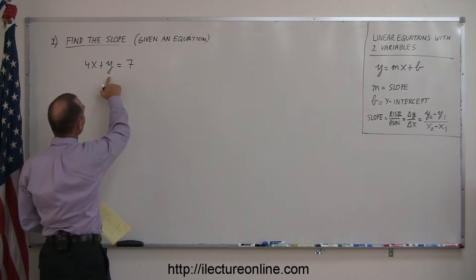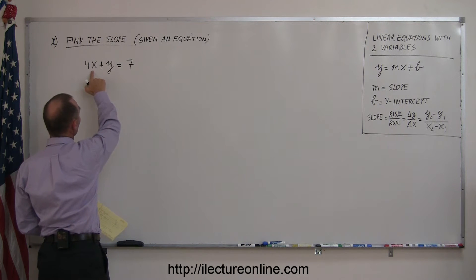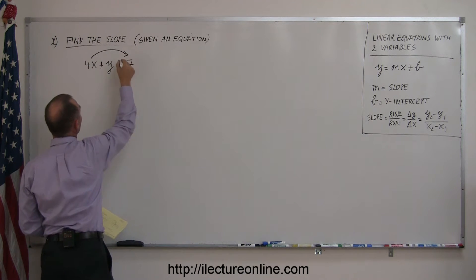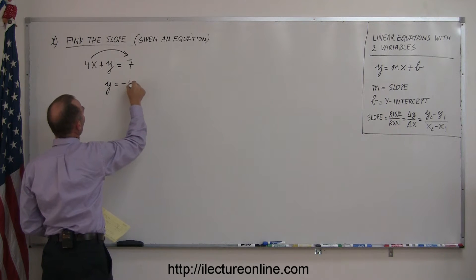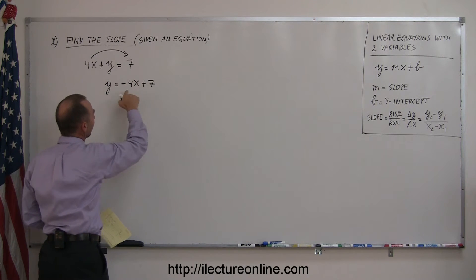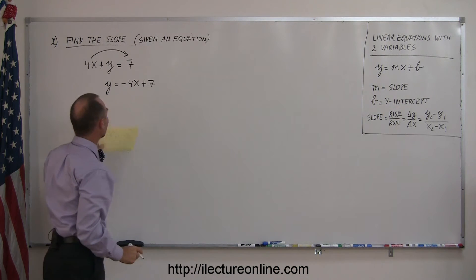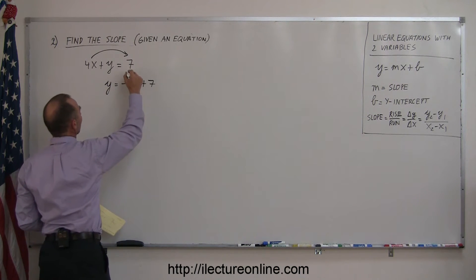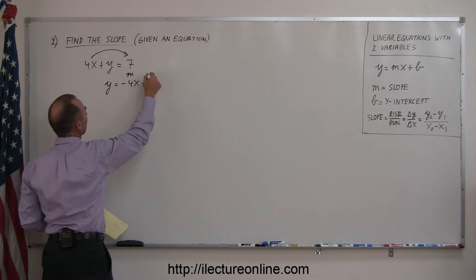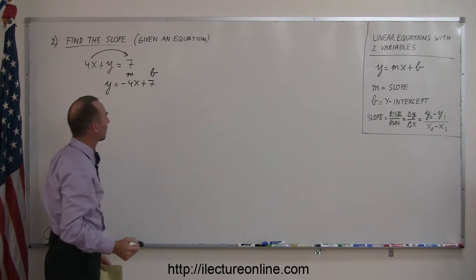Okay, so we have y on the left side already, but the 4x is not on the right side. We want to move that across over here, so it ends up being y equals minus 4x plus 7. Now we check, and yes, it looks exactly the same as over here. So this here is the slope m, and this is the intercept b, the y-intercept.